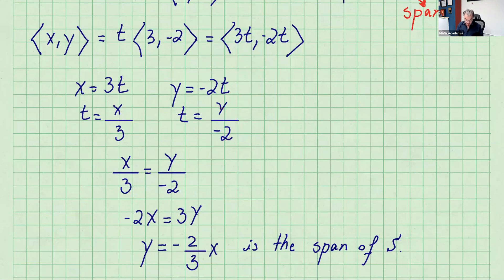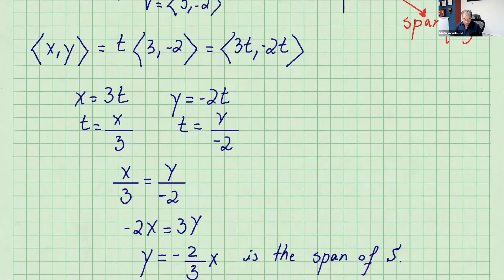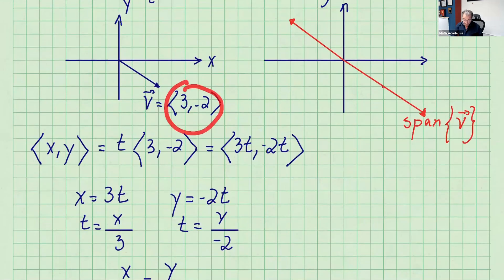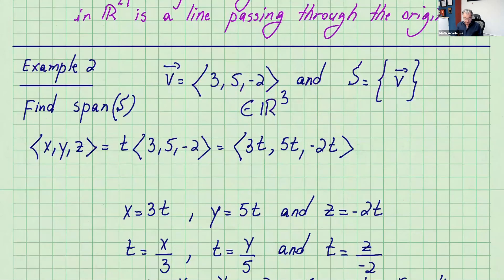You can cross multiply and isolate y. This is just the equation of a line. The slope is -2/3 and the y-intercept is 0, so it passes through the origin. Any scalar multiple of this vector is going to be on that line, y equals -2/3 x. I put the note here for you: the span of a single non-zero vector in R2 is a line passing through the origin.